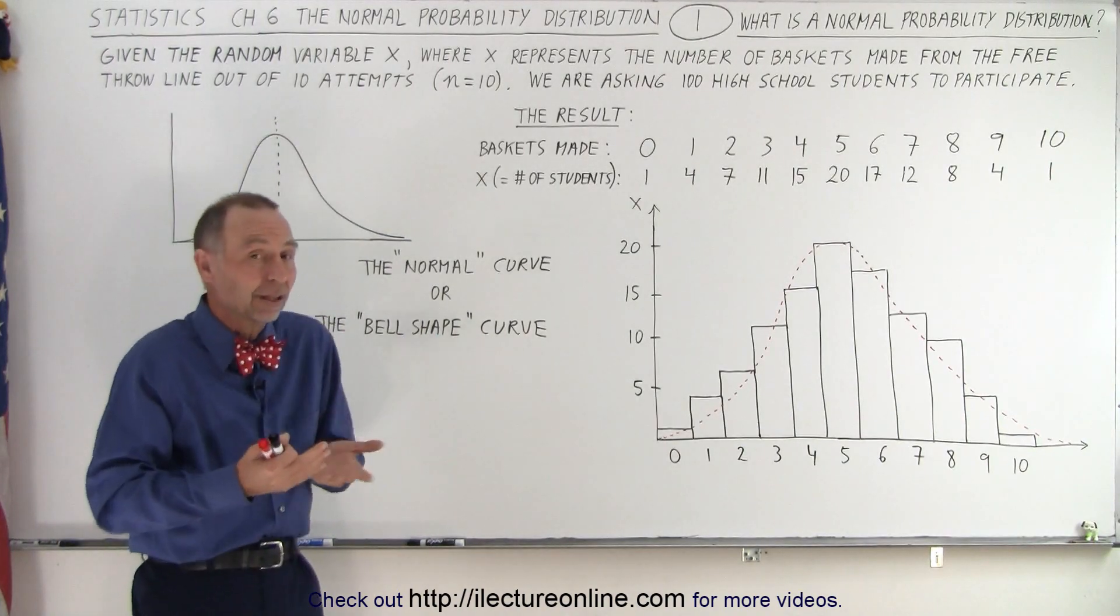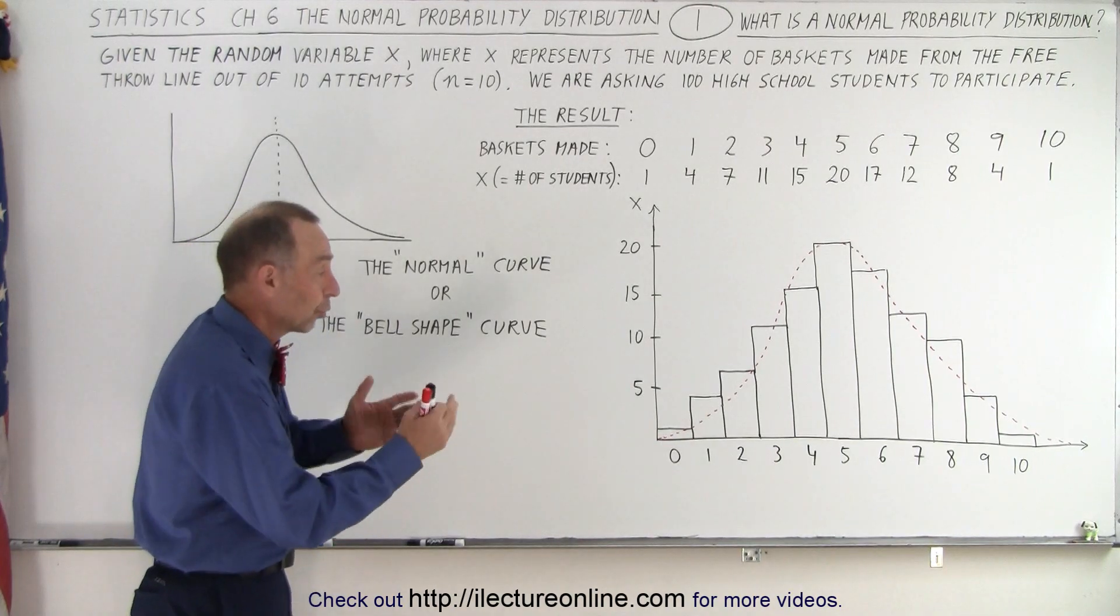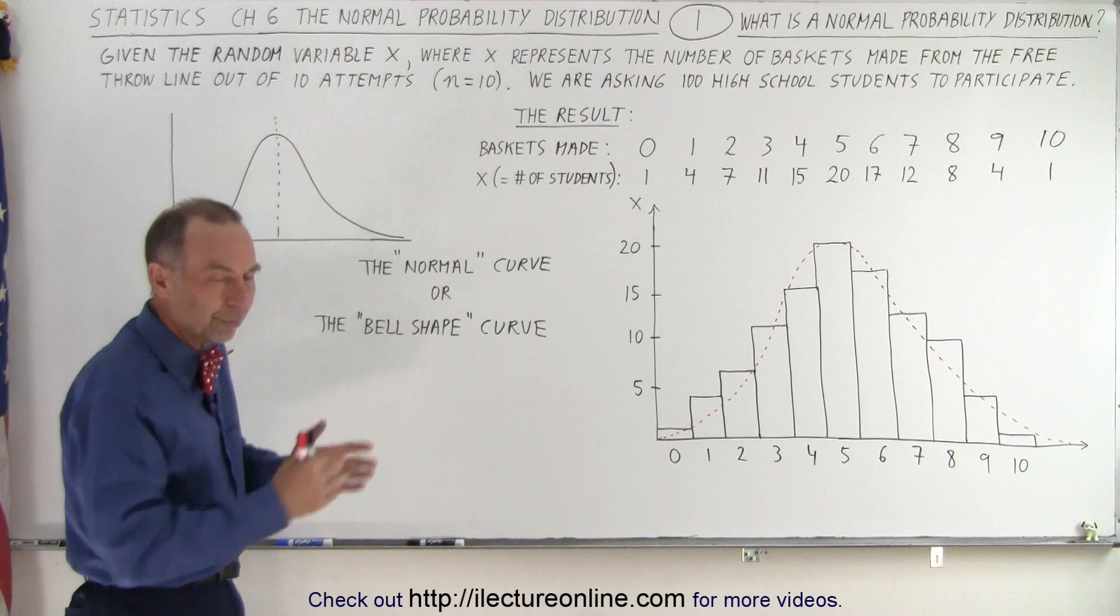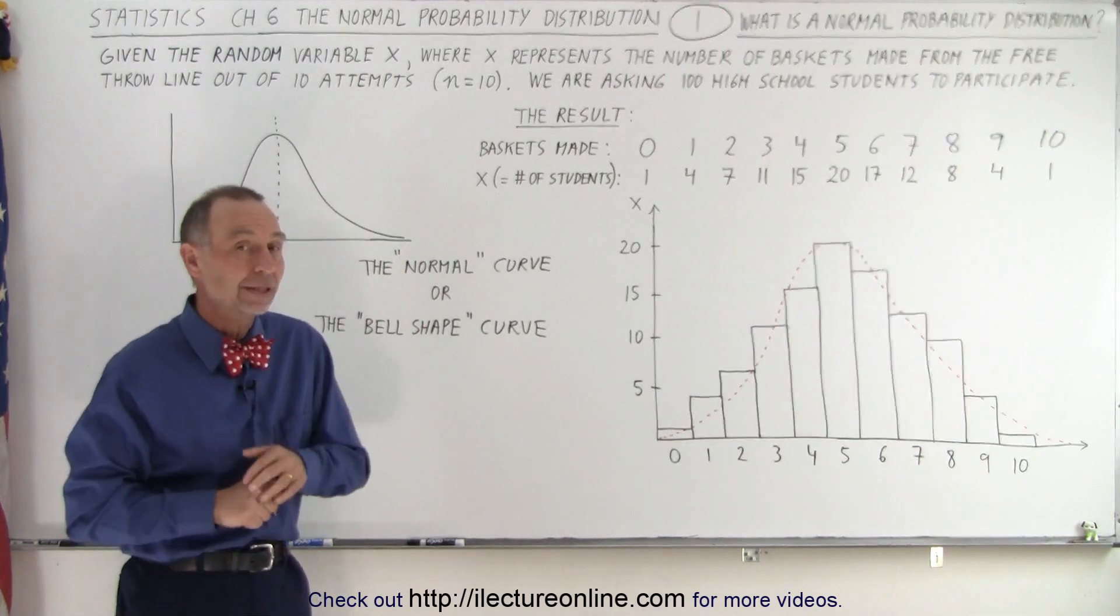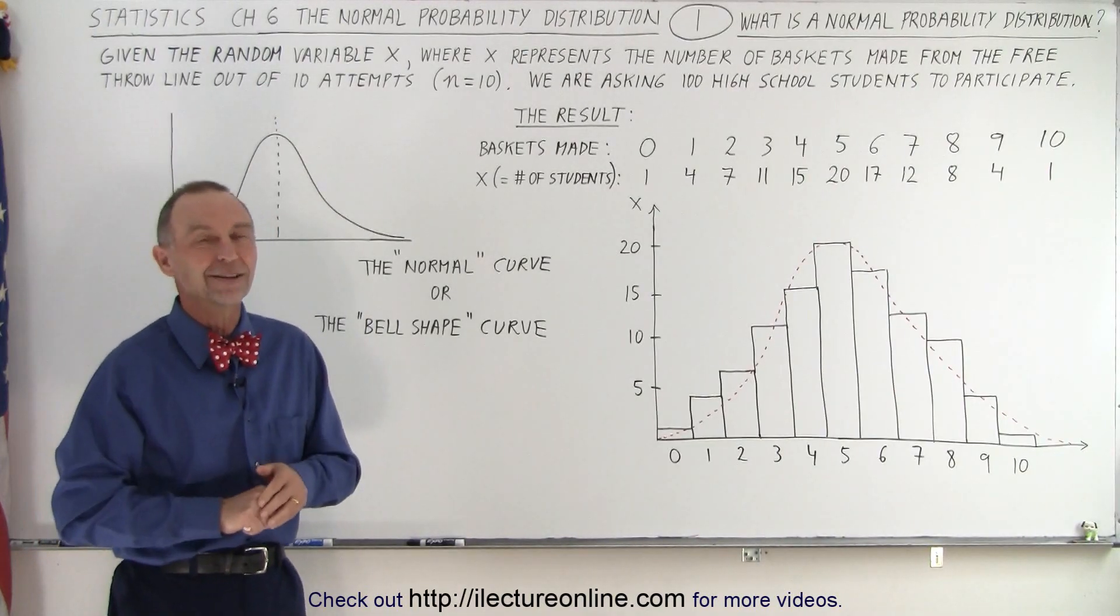For example, you may want to know what the probability is that students will score 6, 7, or 8 baskets, or that students will score 3 baskets. How do you predict that? How do you predict the range of baskets scored? That kind of thing. And all that can be done using the normal probability distribution. So if you're interested, stay tuned, and we'll have some more videos on the topic.